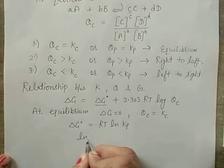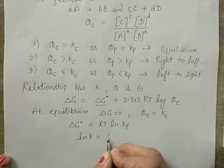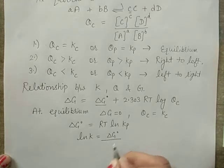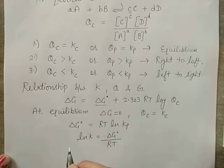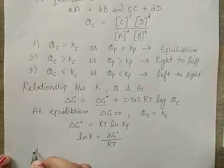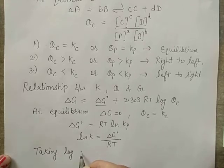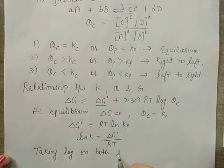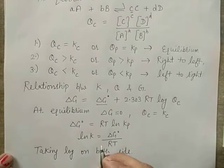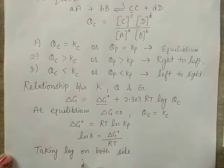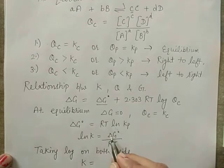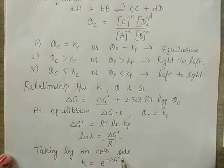From this, ln K = −ΔG°/RT. Taking the antilog on both sides: K = e^(−ΔG°/RT). This equation helps in predicting the spontaneity of our reaction.